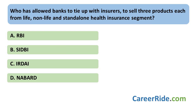Who has allowed banks to tie up with insurers to sell 3 products each from life, non-life, and health insurance segments? The answer is IRDA — Insurance Regulatory and Development Authority of India — which is the apex body for insurance in India. The tie-up between a bank and an insurance company is called bank insurance or the Bank Insurance Model (BIM). In this partnership, the insurance company uses the bank as a sales channel to share insurance products with its customers.